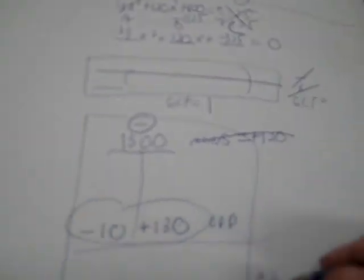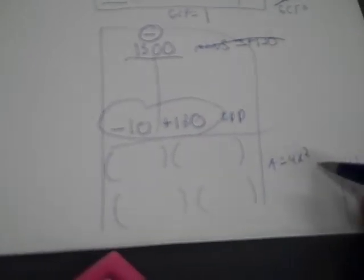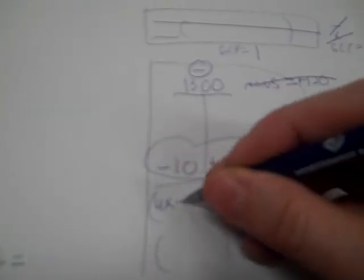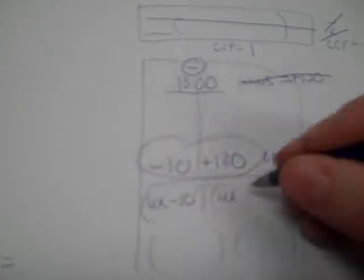My A up there is 4x², so when I make my parentheses I break the middle term down into 4x − 10 and 4x + 130.